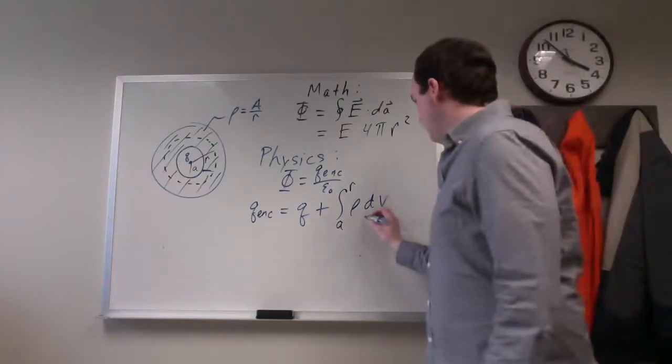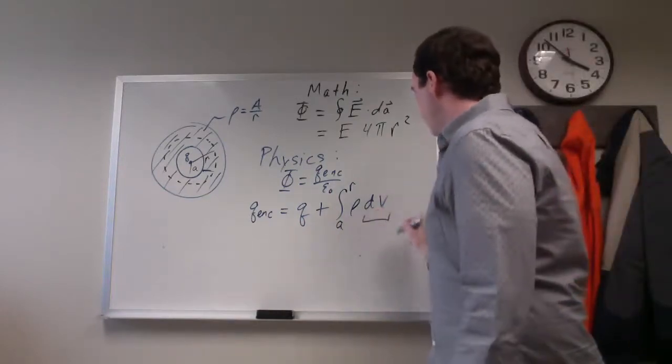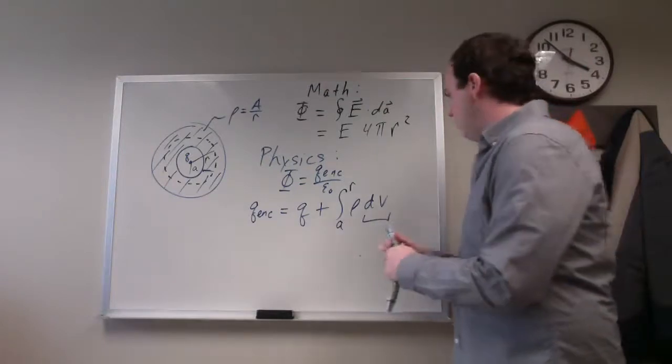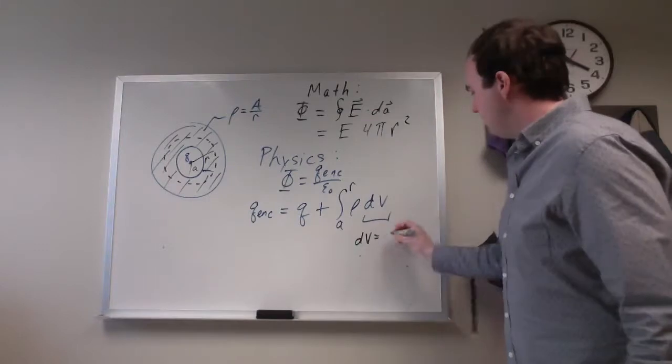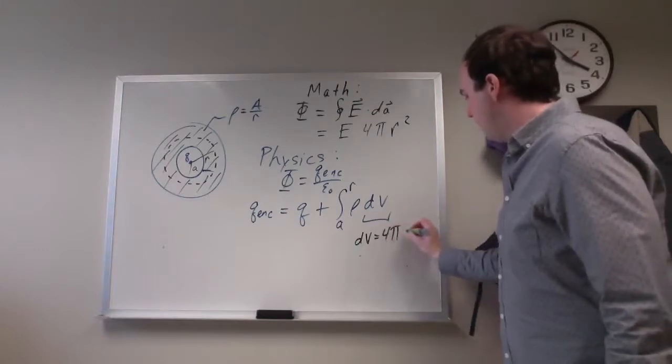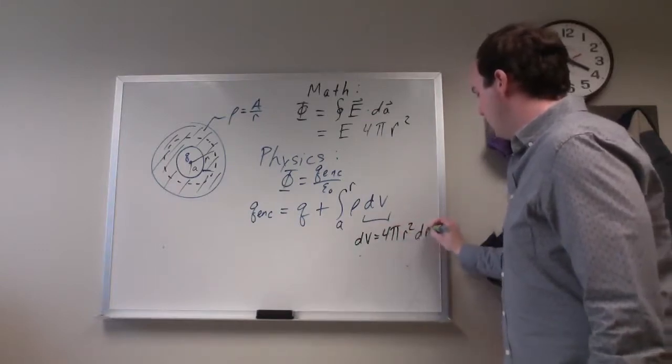Now, this dv, in spherical coordinates, dv is given by, you have a 4 pi r squared dr.